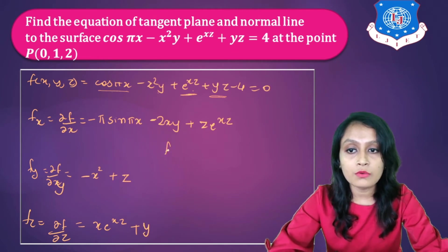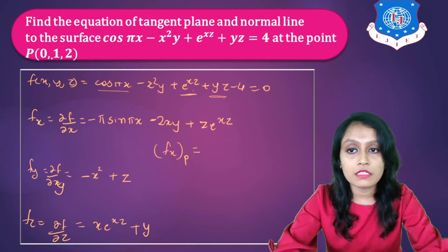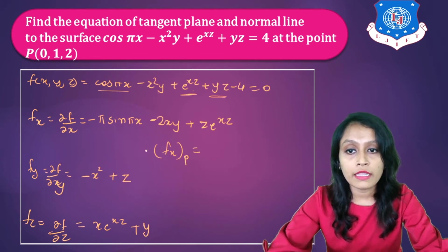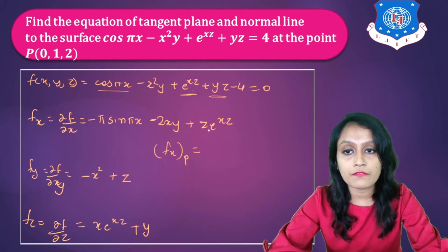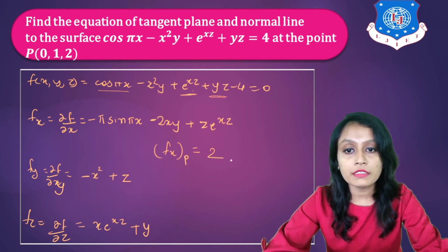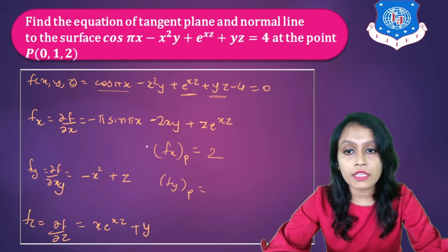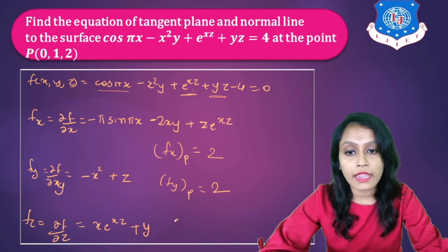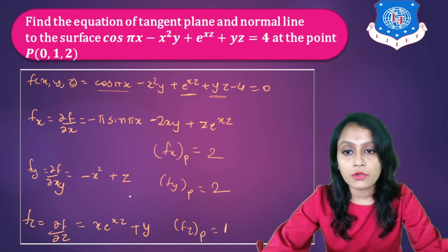Now we have to find the value of Fx, Fy, and Fz at the particular point P = (0, 1, 2). Substituting x = 0, y = 1, z = 2 into Fx gives 2. Fy at point P also gives 2. And Fz at point P gives 1.